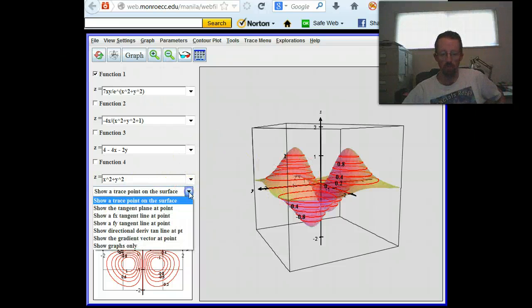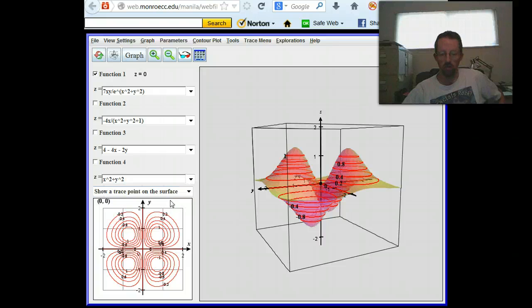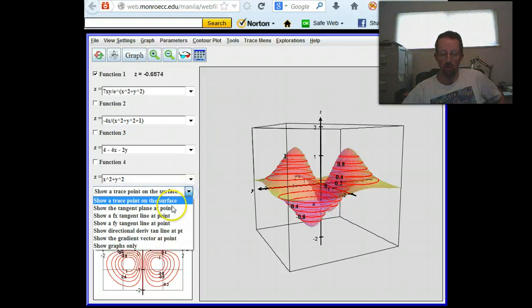Now this one's going to be really useful. Show a trace point on the surface. Just if you click on this thing down here, it'll then, if you notice that black dot going around, see it's at the bottom there. But there's more we can do with that.